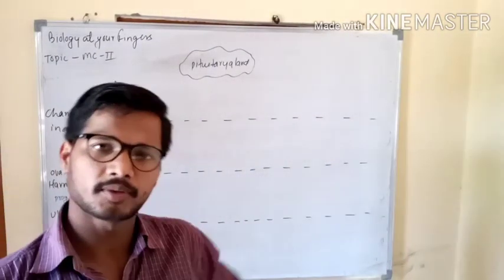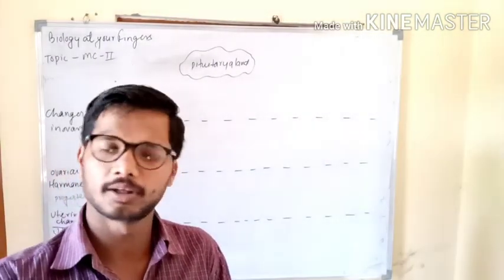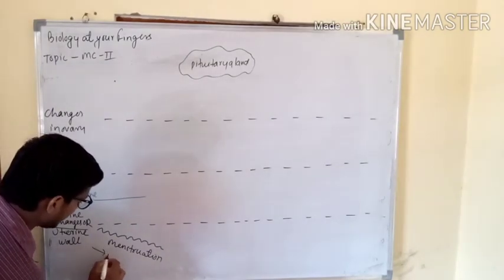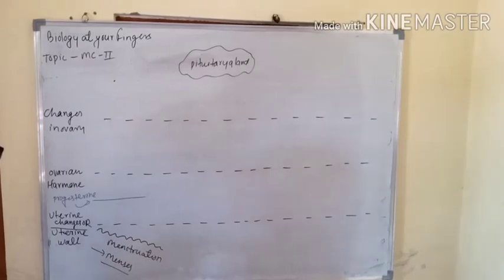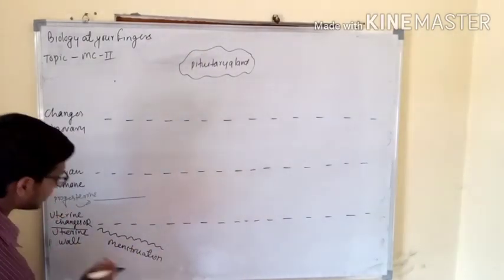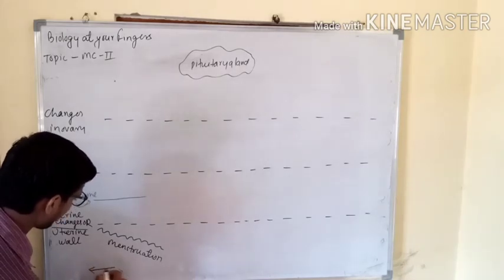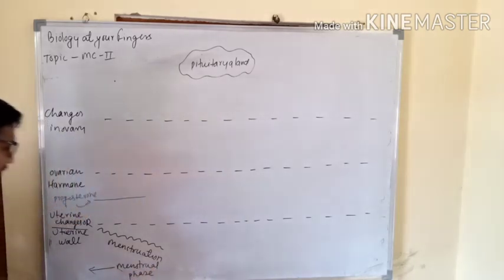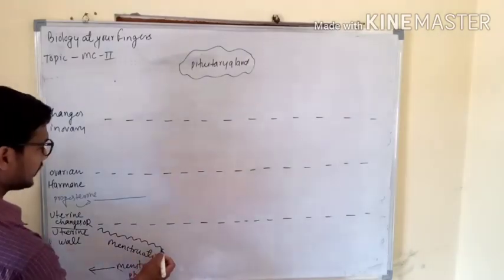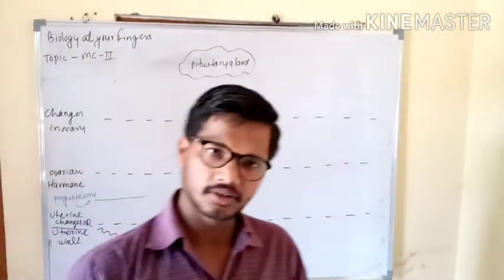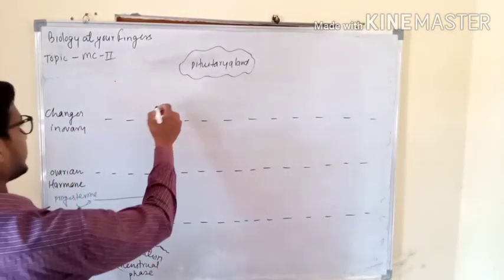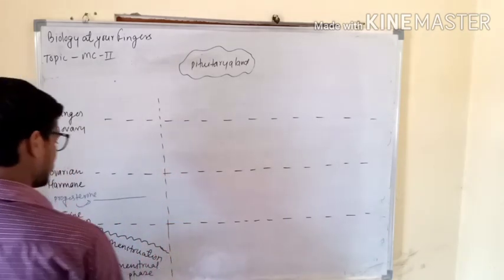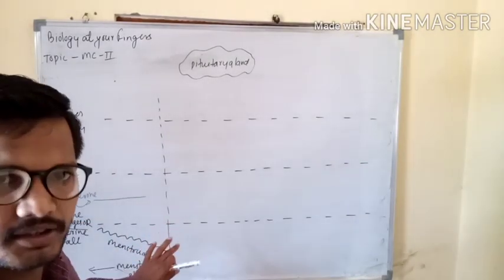Under the very low level of progesterone hormone, the endometrial lining will break and it comes out as blood and mucus — this is known as menses. This phase is simply known as the menstrual phase, where the endometrial lining of the uterus breaks. This is phase number 1, in which there is a very low level of progesterone hormone.